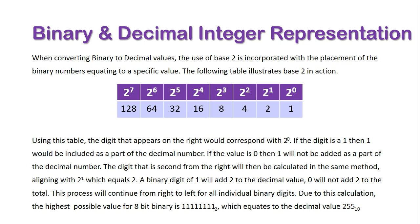This process would continue from right to left for all the individual binary digits. Due to the calculation, the highest possible value for 8-bit binary is 11111111, which equates to 255 in decimal. Let's look at just a quick example here.